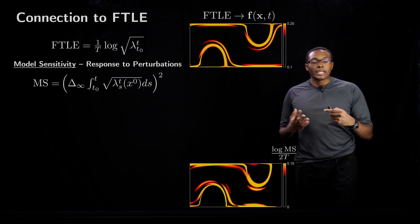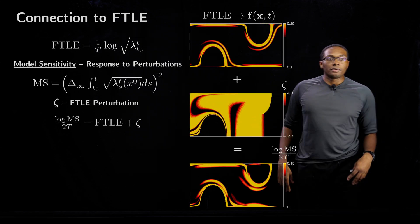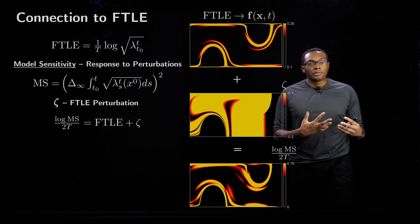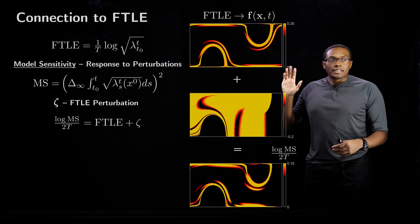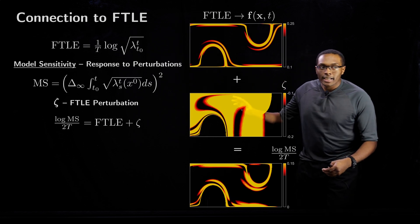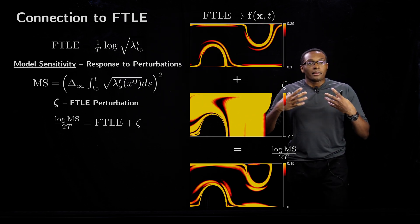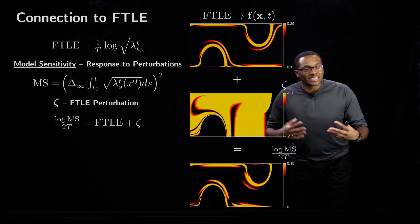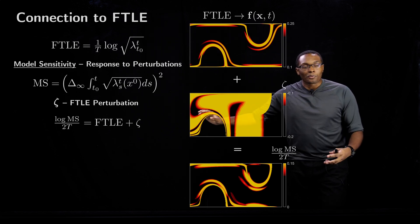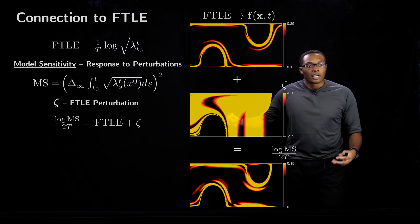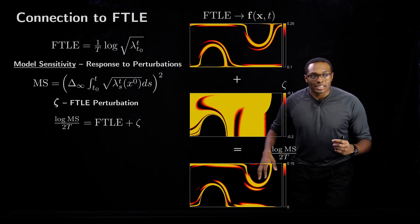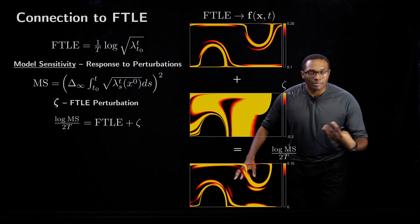What's really interesting about these two flow fields is what happens when you take the difference between the two. There's a connection, and the difference is this FTLE perturbation component zeta. Zeta is the direct perturbation to the baseline FTLE field. These dark and yellow bands are the driving features for this mode sensitivity field, the transient components.